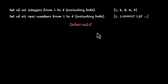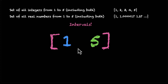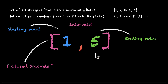This is what we're going to do. We're doing away with curly brackets and introducing new brackets called square brackets. You start with a square bracket and end with a square bracket. Inside, you put your starting point, which is 1, and your ending point, which is 5, separated by a comma. These are called closed brackets or square brackets. That's all we need to represent infinite points from 1 to 5.